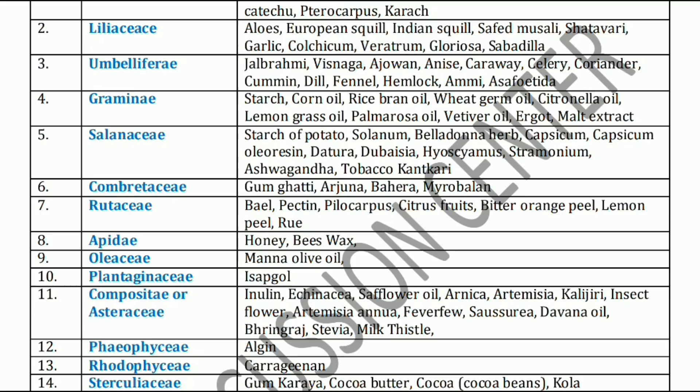The next family is Gramineae. Gramineae family includes starch — a carbohydrate — Corn oil, Rice bran oil, Wheat germ oil. Under volatile oils: Citronella oil, Lemongrass oil, Palmarosa oil, and Vetiver oil. Ergot is an indole alkaloid that comes under the Gramineae family. Next, Malt extract.